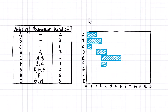For activity G, it's three days long and can't start until D, E, and F are all complete. D finishes at the end of the fourth day, E finishes at the end of the seventh day, and F finishes at the end of the fourth day. So G can't start until after the seventh day — at the beginning of the eighth day — and it runs for one, two, three days.